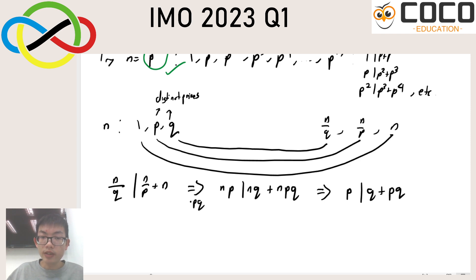And pq is a multiple of p, but q is not a multiple of p because q is a prime. So this is actually a contradiction. This does not work.